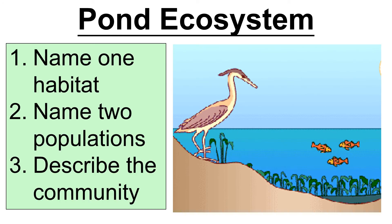Press pause and see if you can write down the habitat, two populations, and the community, then press play again. For the habitat here, you could say the pond, the mud at the bottom of the pond, or within the plants — any of them would be fine. Two populations: you've got heron, plants, and fish shown here. And for the community, you'd be saying heron and fish and plants.